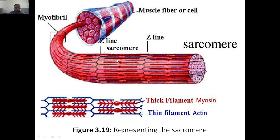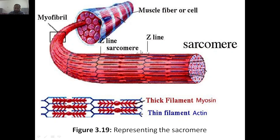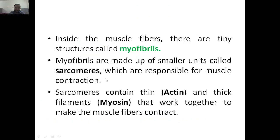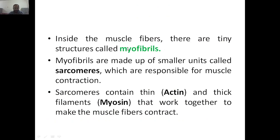The muscle fiber is a cell. Inside it, the myofibril contains sarcomeres. Sarcomeres contain myosin and actin — actin is the thin filament and myosin is the thick filament. Sarcomeres contain thin filaments (actin) and thick filaments (myosin) that work together to cause muscle contraction. If the myofibril has to contract, then myosin and actin should get activated. The blue structures you can see are actin filaments, and the thicker ones are myosin filaments. This is how exactly the muscle structure looks.